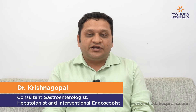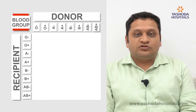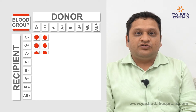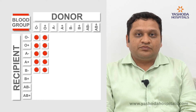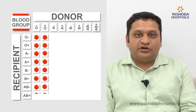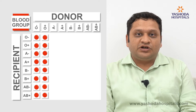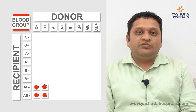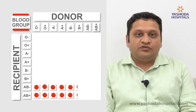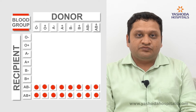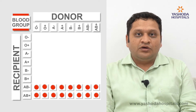A common question asked about live-related liver transplant is: who can donate the liver? The common criteria for donation predominantly include the blood group of the donor and the blood group of the recipient. An O blood group patient can be a universal donor — he can donate to patients with blood group A, B, AB, and O. A patient with blood group AB can be a universal recipient, receiving an organ from any blood group: O, A, or B.